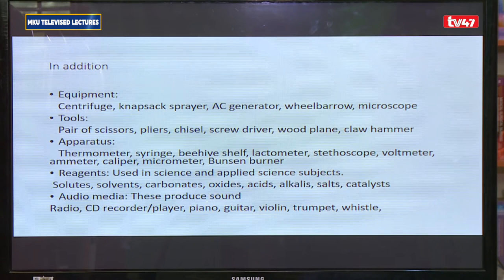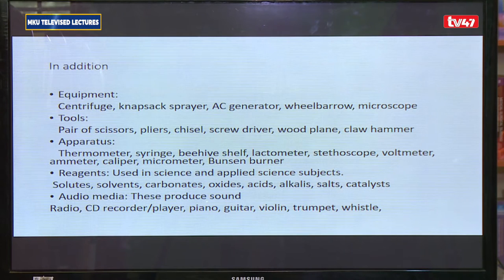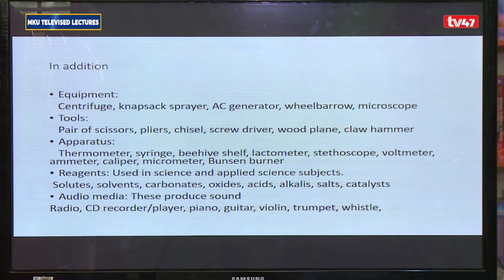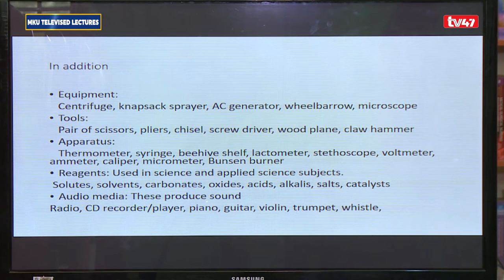Apparatus are commonly used in science laboratories — for example, a thermometer, syringe, beehive shelf, lactometer, stethoscope, voltmeter, ammeter, calipers, micrometer screw gauge, and Bunsen burners. Reagents are used in agriculture, biology, chemistry, and physics. Examples include solvents, solutes, carbonates, oxides, acids, alkalis, salts, and catalysts.